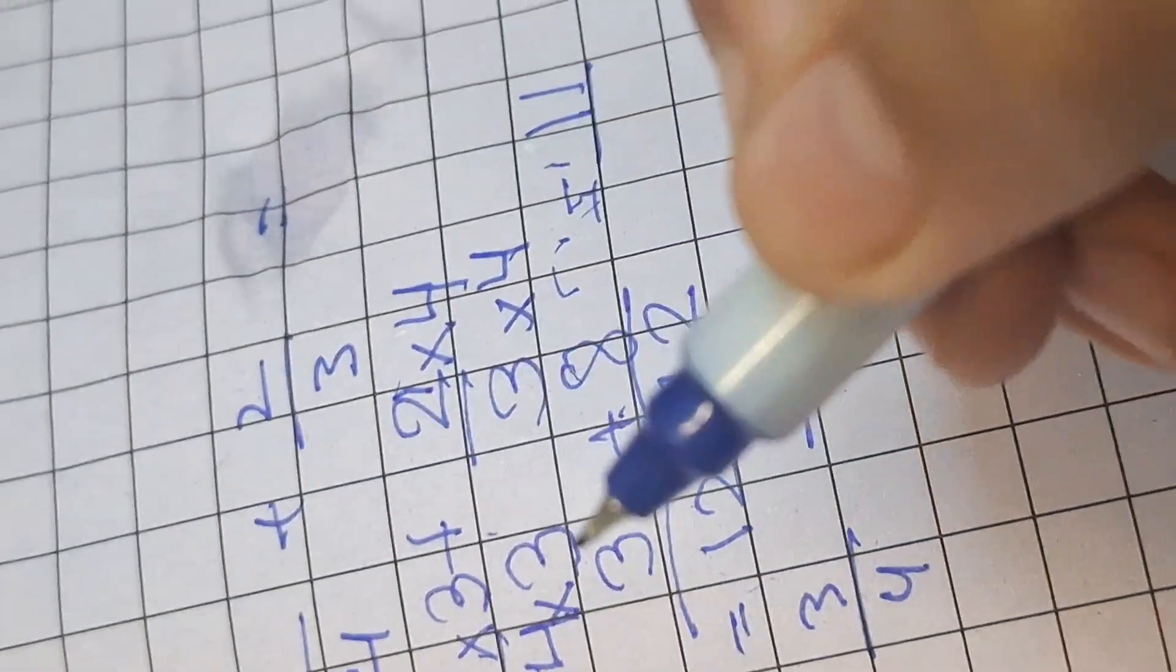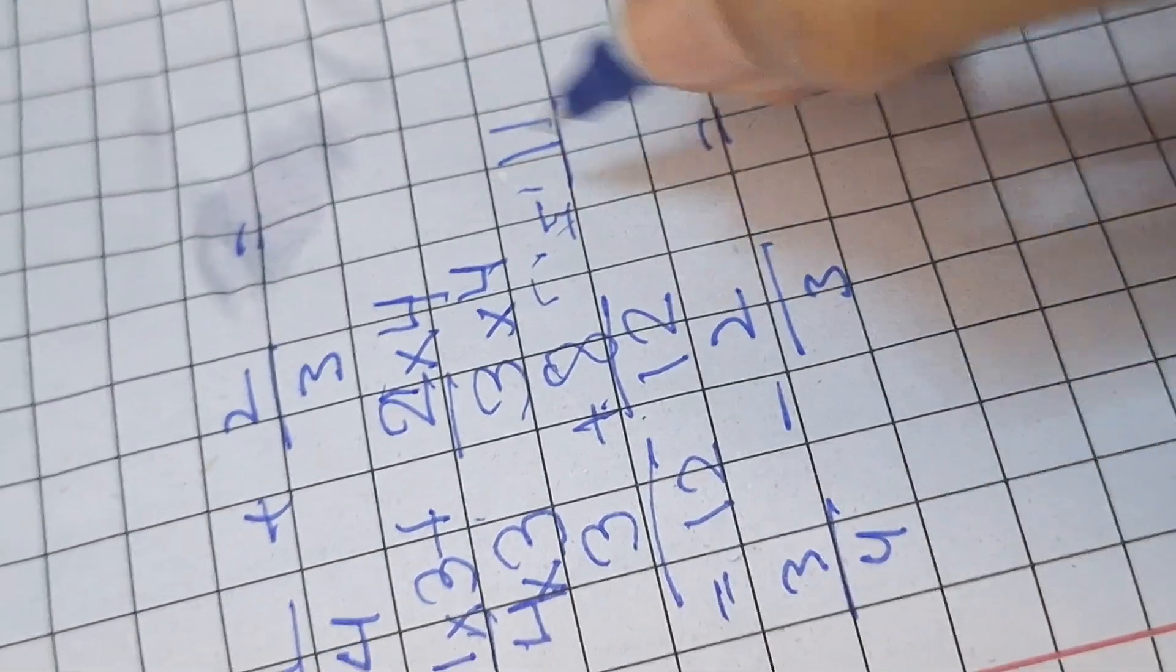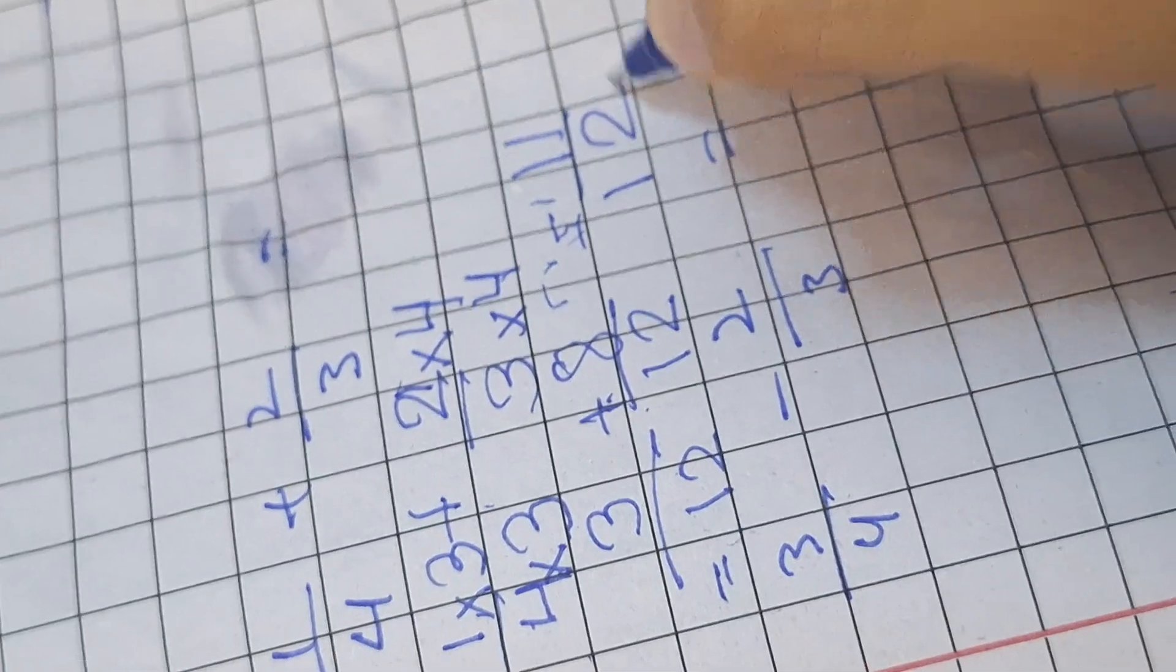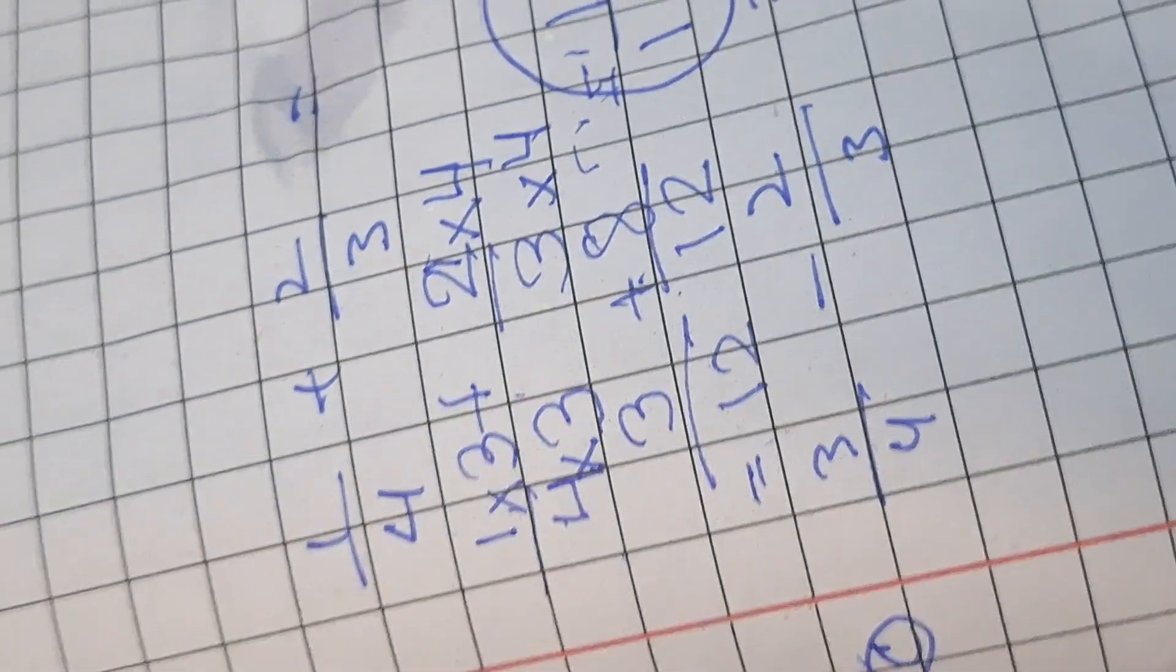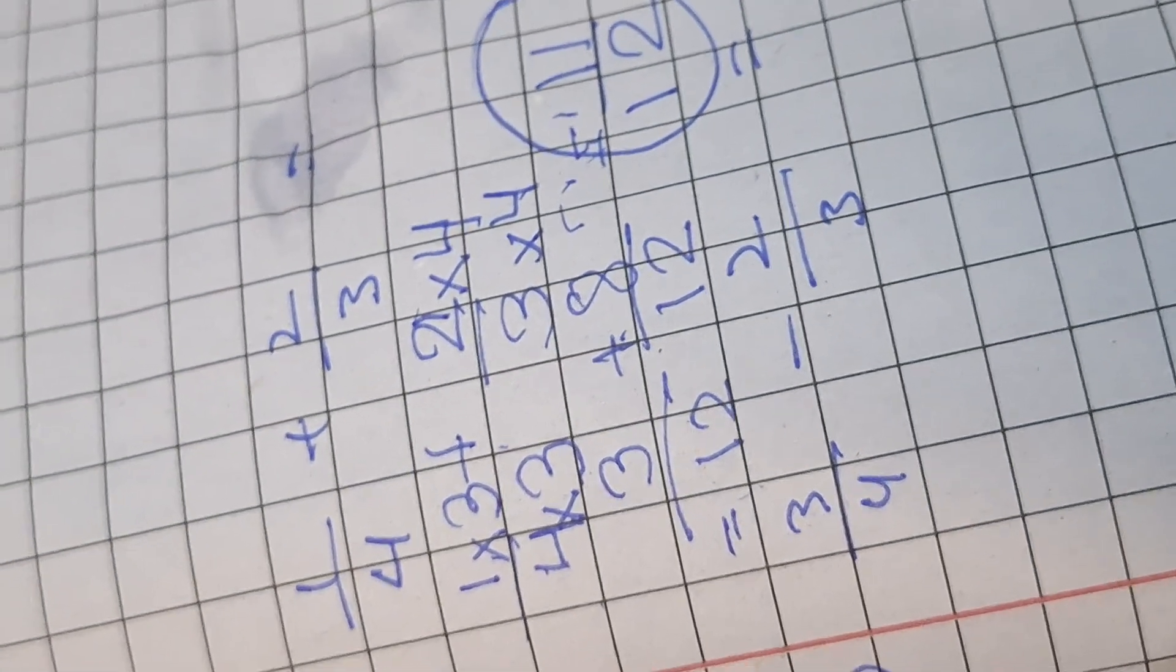never plus the denominators. So 11 upon 12 is our answer. So that's how you do it, bye!